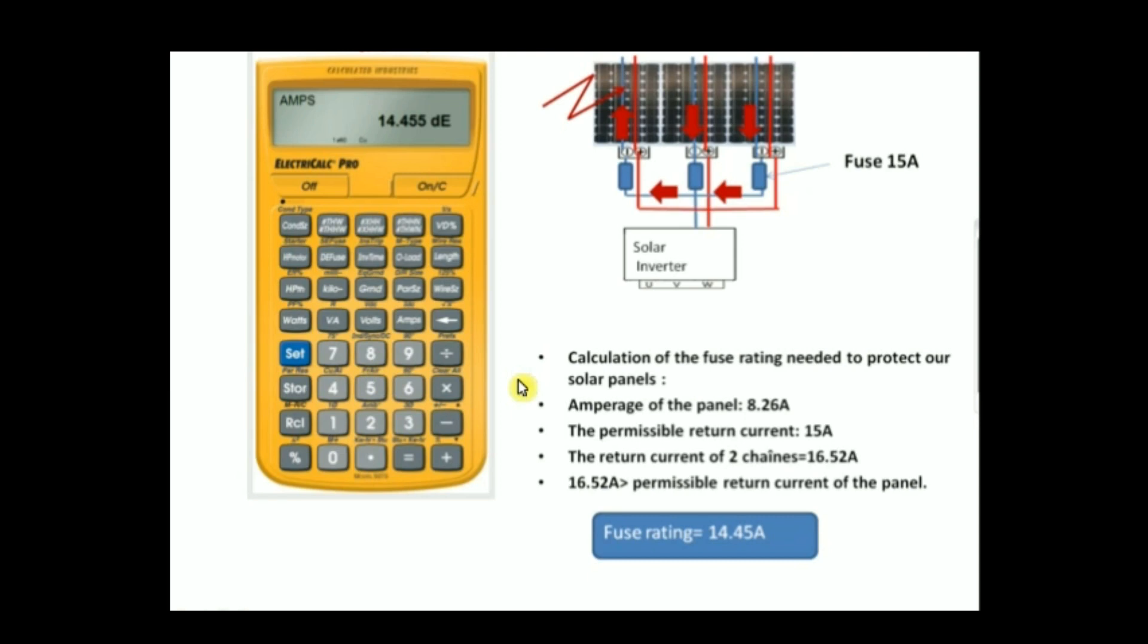And if we click a second time on the fuse, we're going to display the full load current percent multiplier used to determine the fuse size, which is 175 percent, and the scale is enough to secure the panel or the chain from the return current.